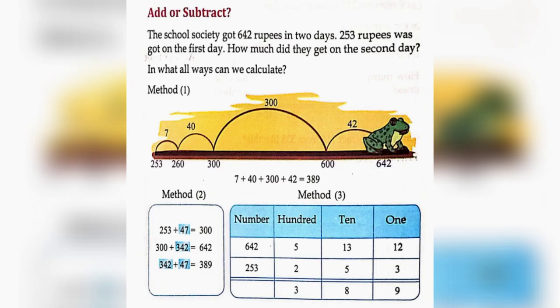Add or subtract. The school society got 642 rupees in 2 days. 253 rupees was got on the first day. How much did they get on the second day? So, here we can minus 642 minus 253 is equal to 389.